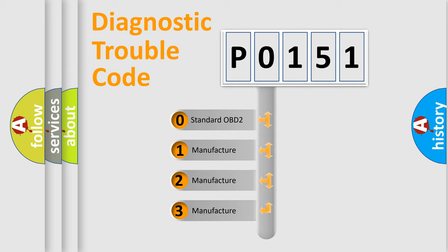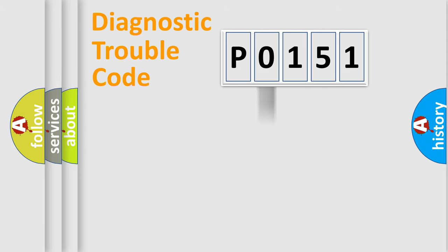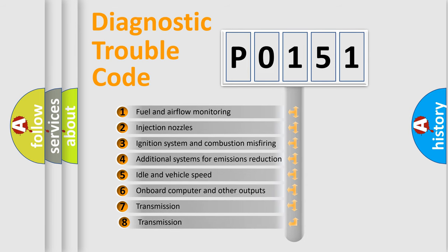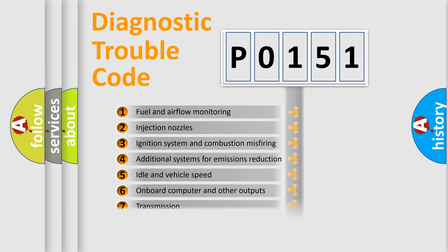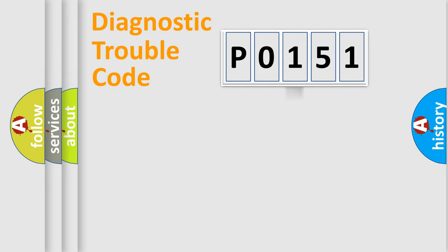If the second character is expressed as zero, it is a standardized error. In the case of numbers 1, 2, 3, it is a more manufacturer-specific expression of the car-specific error. The third character specifies a subset of errors.